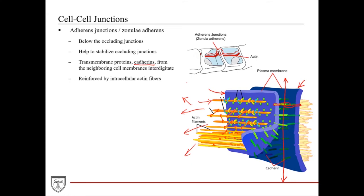Knowing the functions of the adherence junctions, let's predict some consequences of weakened adherence junctions. Weakened adherence junctions would mean weakened tight junctions or occluding junctions, which could then potentially allow paracellular transport of macromolecules — something we're trying to avoid.